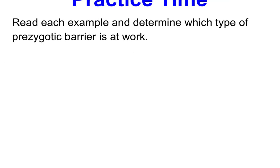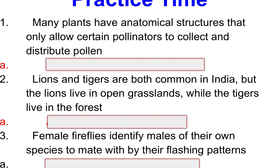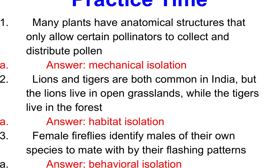Now let's practice identifying which type of barrier is at work. Example one: many plants have anatomical structures that only allow certain pollinators to collect and distribute pollen. Example two: lions and tigers are both common in India, but lions live in open grasslands while tigers live in the forest. Example three: female fireflies identify males of their own species to mate with by their flashing patterns. The answers are: one — mechanical, two — habitat isolation, three — behavioral isolation.